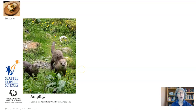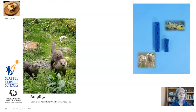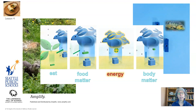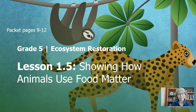We watched a video showing otters in action and gathered evidence to support our claim that animals grow by eating to add molecules to their body. We used household items to show how otters grow when they eat, and we used a simulation to observe how food matter is used to build the body of an animal so it can grow, and sometimes the food matter is broken down and energy is released.